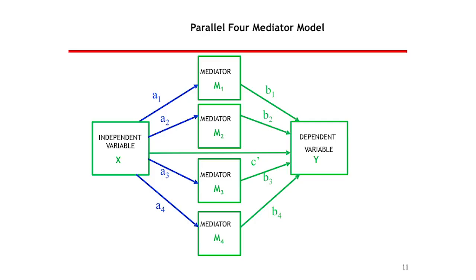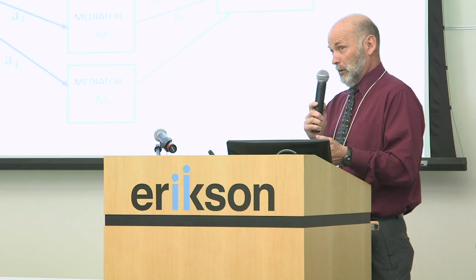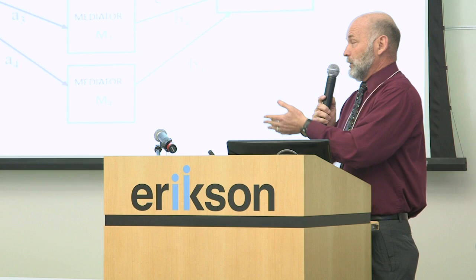We can expand this model. With an independent variable and four parallel mediators, we'd have four mediated effects: A1×B1, A2×B2, A3×B3, and A4×B4. The mediators don't have to be parallel — they can be sequential. You can detect whether specific mediated effects are present, compare them, and do a variety of things. This could also be set up in a longitudinal model, though there would be many more arrows to keep track of.